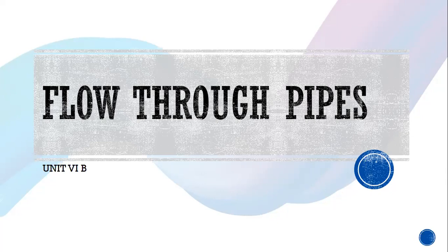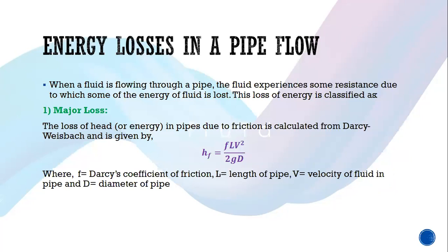There is an energy loss when water — or any fluid, as a matter of fact — travels from one section to another. There are various factors contributing to the losses of energy. Majorly, there is only one major factor which causes a significant loss in a pipe, and there are several minor factors. So first we learn the major factor due to which the energy loss takes place, and after that we go to minor losses in the pipe. When fluid is flowing through a pipe, the fluid experiences some resistance due to which some of the energy is lost. This is classified as major loss and minor loss.